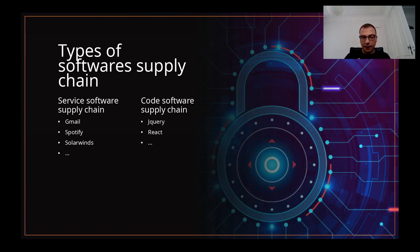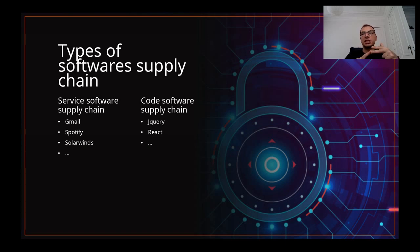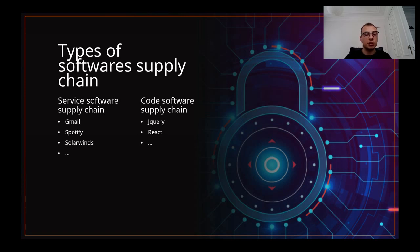There is still a difference between those two, and that's why there are two types here. Most of the time — not always, but most of the time — the code software supply chain will be open source. That means everybody can see the code and audit it, everybody can modify the code and distribute it. That's most of the time not the case for the service software supply chain. For example, with the Spotify app, you just receive it and you don't have any view on the code.